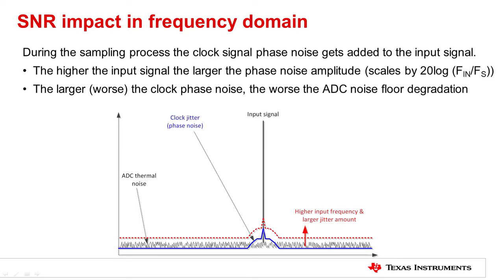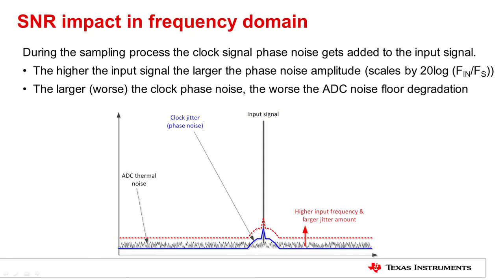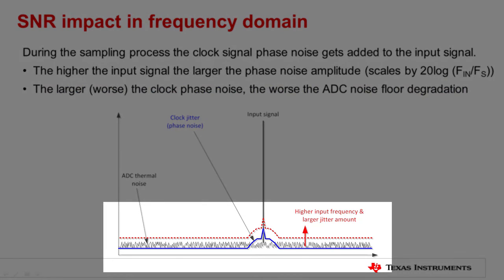Perhaps a better way to grasp the noise floor degradation due to clock jitter is to look at it in the frequency domain. During the sampling process, the clock signal phase noise gets added to the input signal. But the clock phase noise amplitude also gets scaled by a factor of 20 log input frequency to clock frequency. Similar as in the time domain analysis, if the input frequency increases by a factor of 10, the clock phase noise amplitude increases by 20 dB prior to adding it to the thermal noise of the ADC. And obviously, the larger the inherent clock phase noise amplitude, which directly translates to higher jitter, the worse the ADC noise floor degradation.